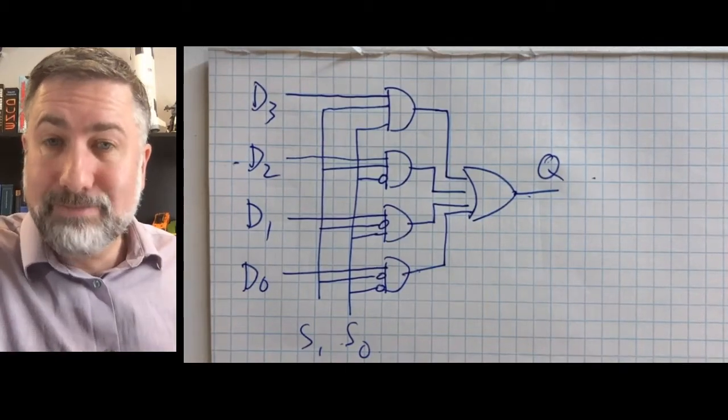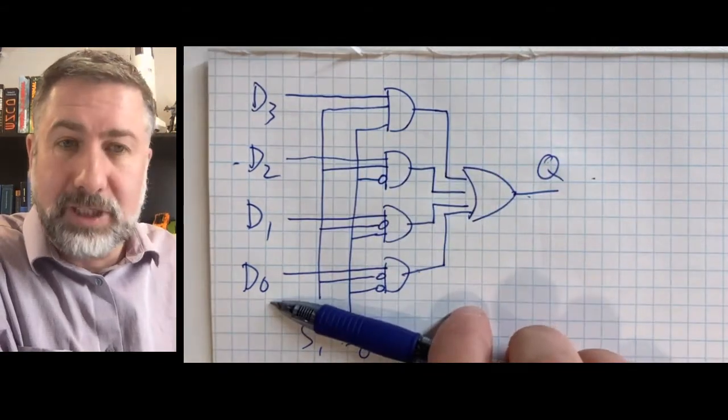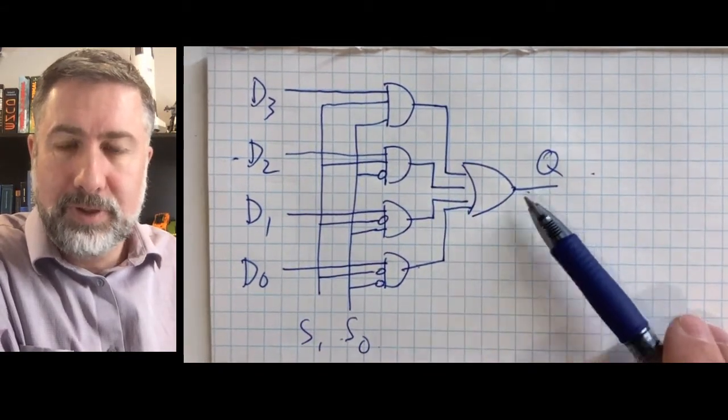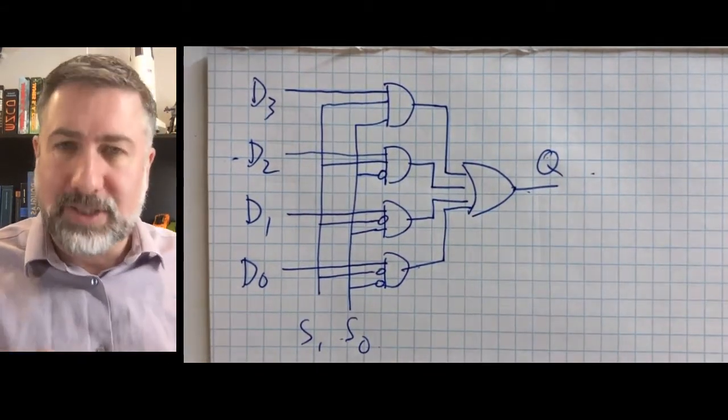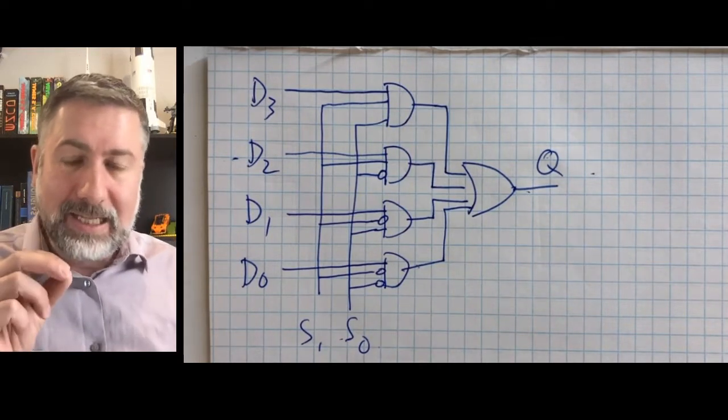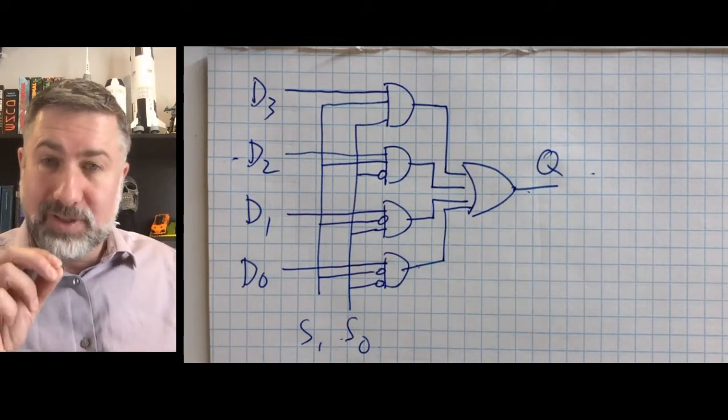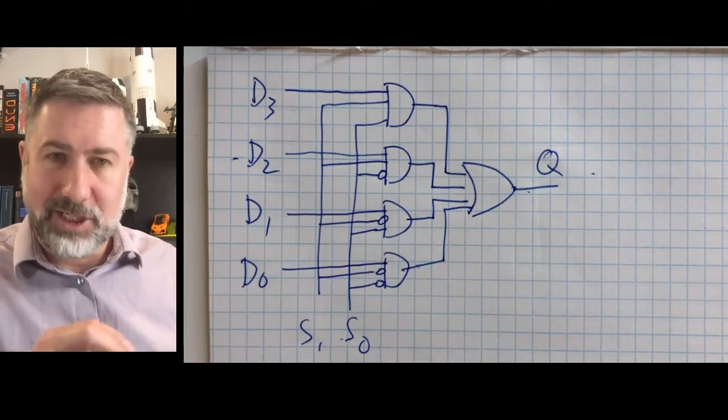This is the circuit for our multiplexer. This is choosing one of a set of possible inputs to route to an output. Now we want the opposite. We want a demultiplexer. We want to be able to take that one data line and divert it to one of a set of possible outputs based on the selection lines.